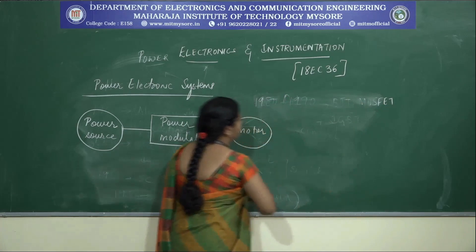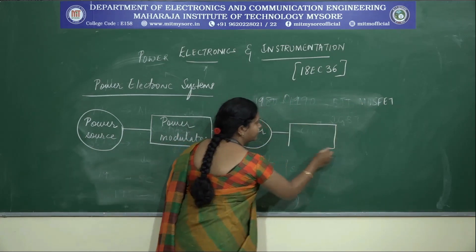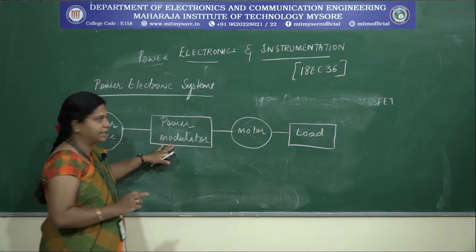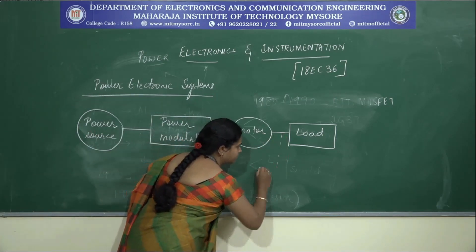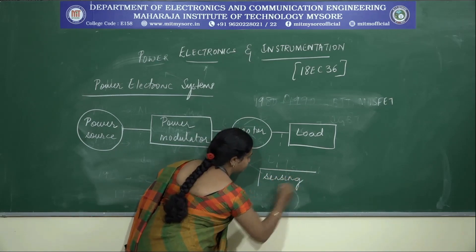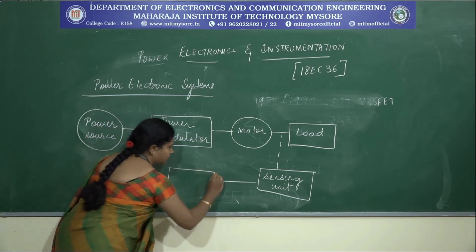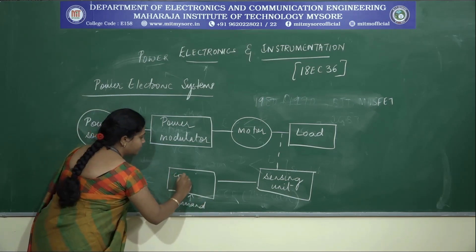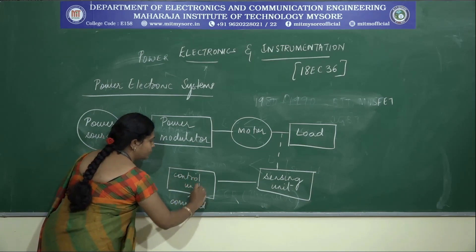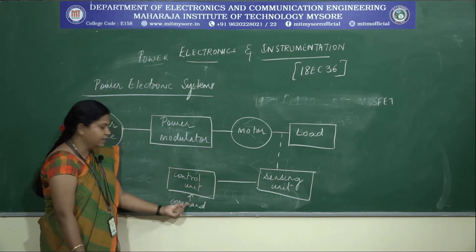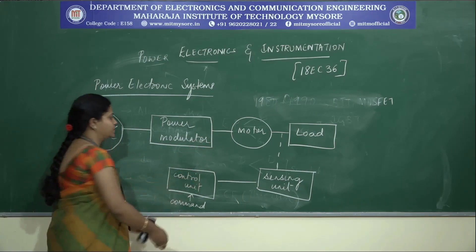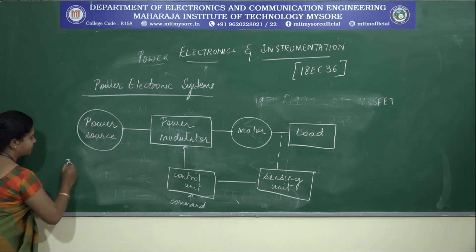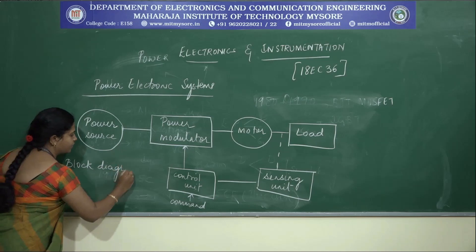The power modulator is connected to the motor, which can also be connected to different types of loads. In order to achieve the controlling action, we sense the output using a sensing unit. For different commands, there is a control unit which compares what is sensed from the output side to what command is being given. The difference is fed as the control input to the modulator. This is the general block diagram of a power electronic system.